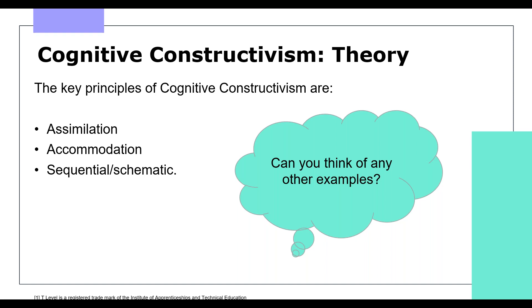Let's explore the key principles of Cognitive Constructivism Theory. Assimilation: learning builds on what students already know and can do. Accommodation: knowledge is actively constructed through a process of discovery. And sequential and schematic: learning follows a sequence of stages. An example in early years — when a child encounters a horse, they might assimilate this information and immediately call the animal a dog.